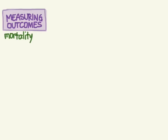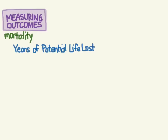Let's continue with mortality. Now we're going to look at a specific measure of mortality called years of potential life lost, abbreviated YPLL. It's an estimate of the average amount of years a person would have lived if he or she had not died prematurely. So it's really a measure of premature mortality and a different way of measuring mortality.